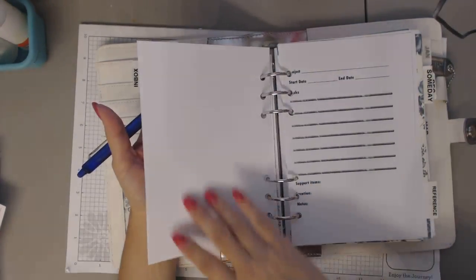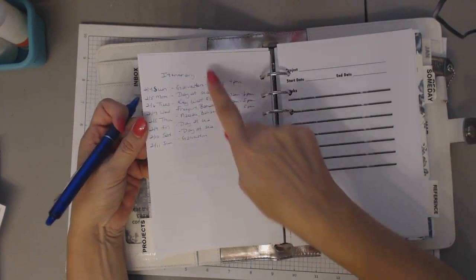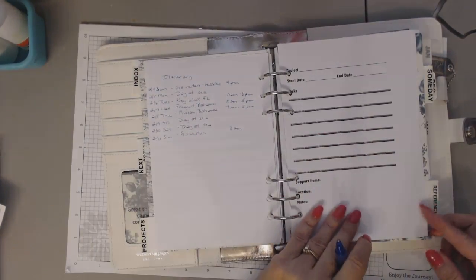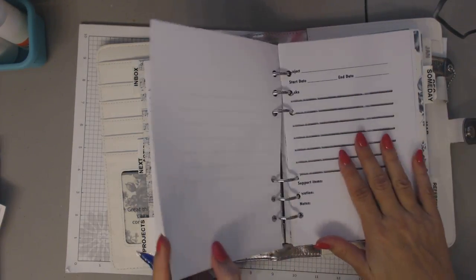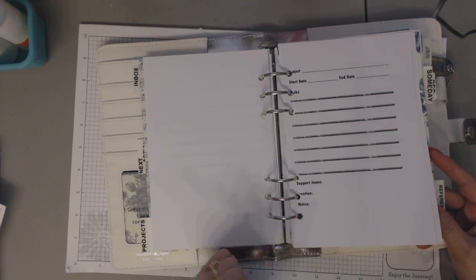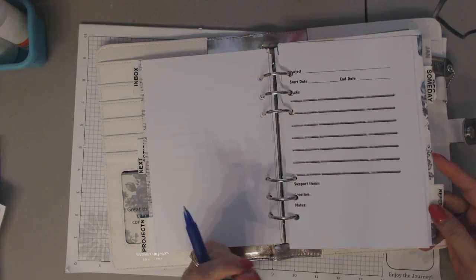And then I keep the backs blank because I like to write, like for instance, with our cruise, this is the back of that page. But this is the itinerary for the cruise. So I have that information. But these blank pages are for when I finalize my goals for 2018. I will do quarterly project pages for each of those goals.